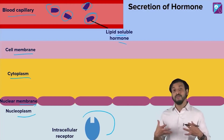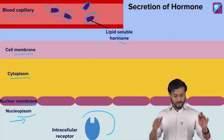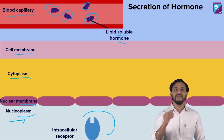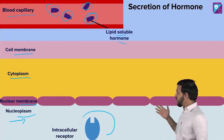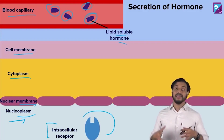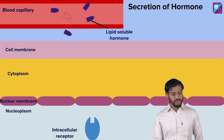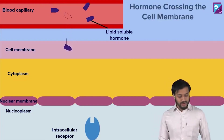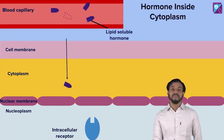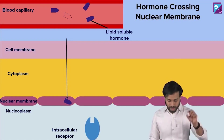The intracellular receptors are actually inside the nucleus — inside the nucleoplasm. Now think about this: lipid soluble hormones can cross the cellular membrane, which is a lipid bilayer. Now I've arrived at the nuclear membrane. Will the hormone be able to cross this layer too? The nuclear membrane is also made up of a lipid bilayer, so yes, it can definitely cross the nuclear membrane as well.